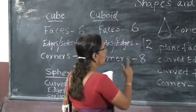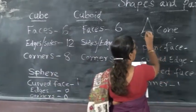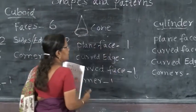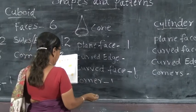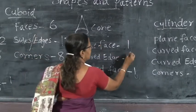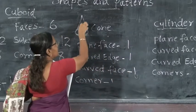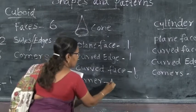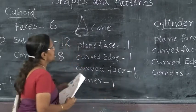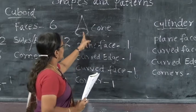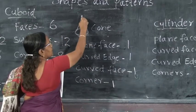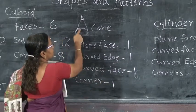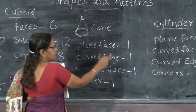Next one, cone — plain face. Cone has one plane face. Curved edge: one. Then corner: one. Plane face: one. Corner: one. Curved edge: one. Corner: one. Curved face: one.